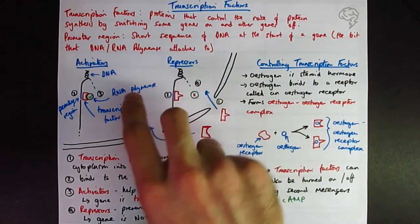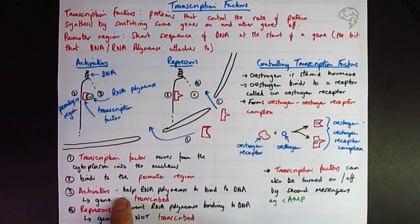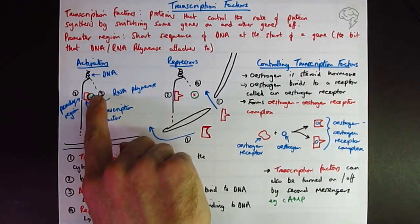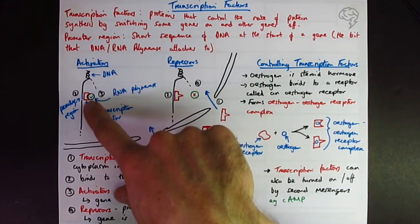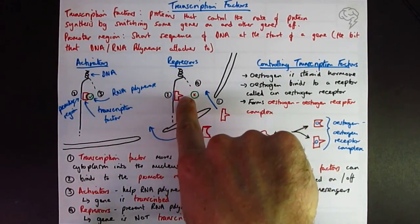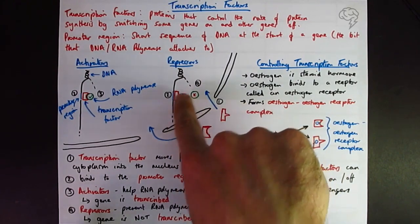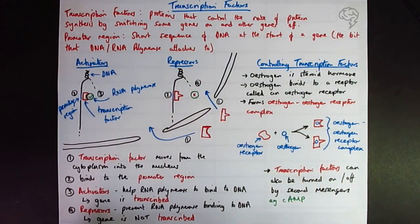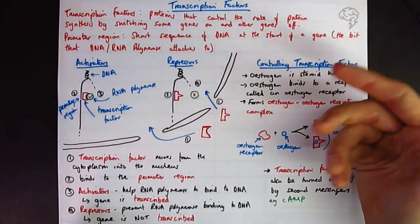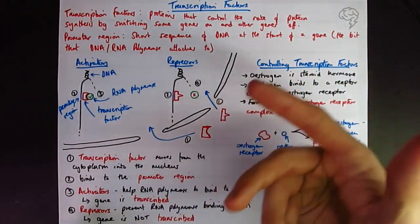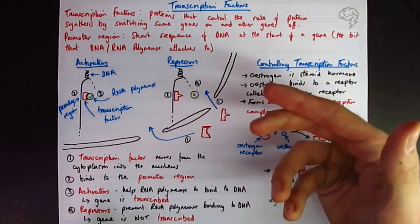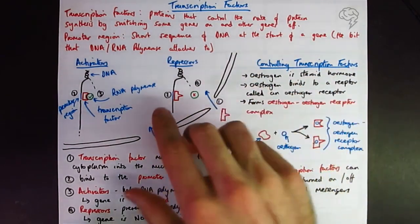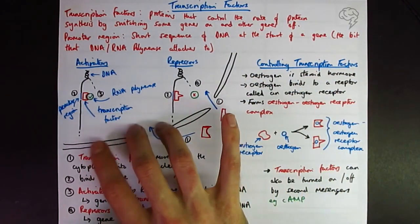which would then move into the nucleus and bind onto the promoter region and either cause it to increase the rate of transcription by helping RNA polymerase bind to the beginning of the target gene or prevent genes being expressed by preventing RNA polymerase from binding. The significance of this is that different cells need to express different proteins. All cells have all of the DNA, but only some are turned on. And which ones are turned on and controlling which ones are turned on determine what the cell's function is. And that's why it's essential you can control which genes are on and off. And this is the mechanism or one of the mechanisms by which we do that.